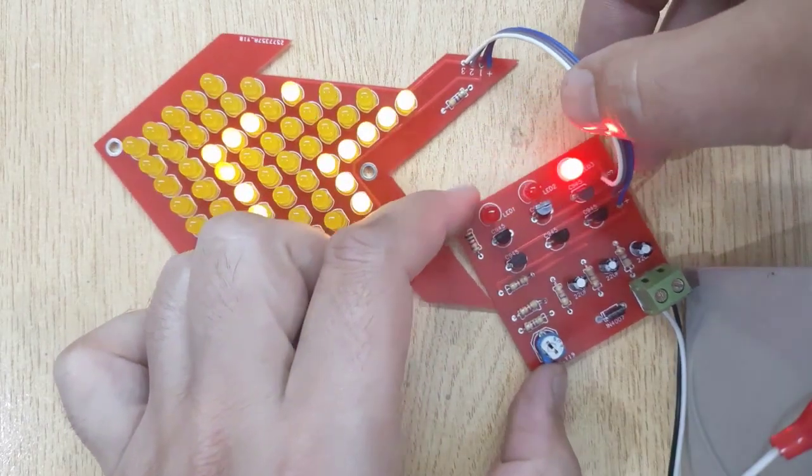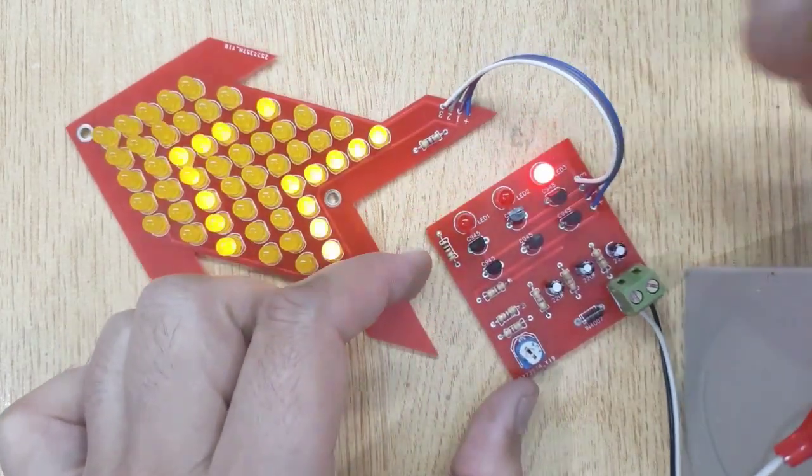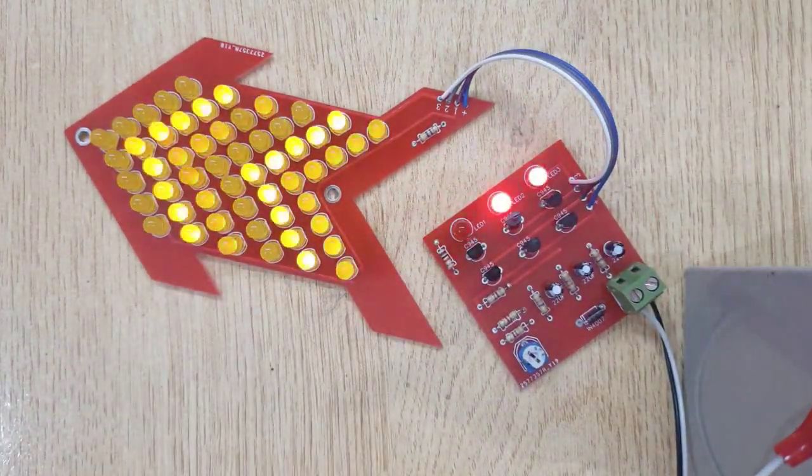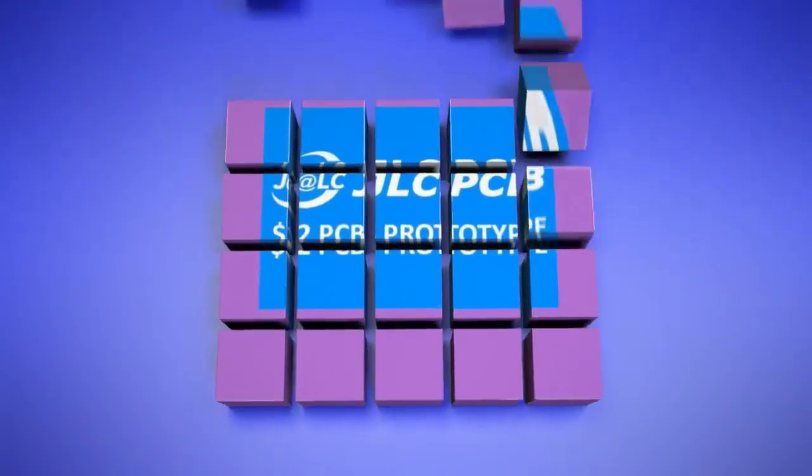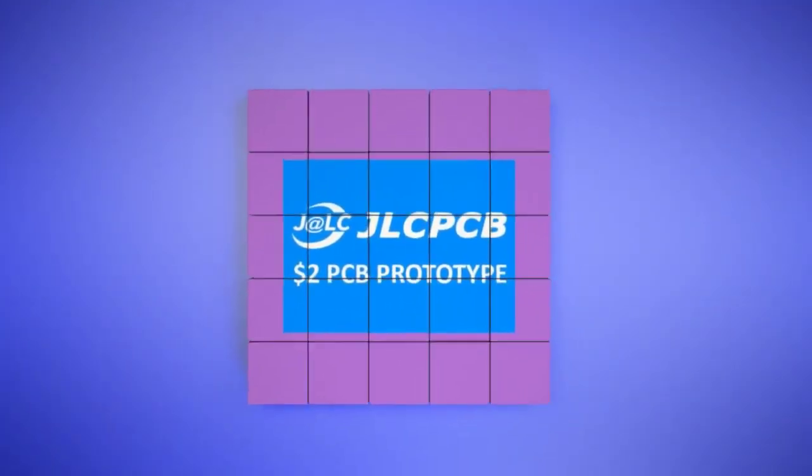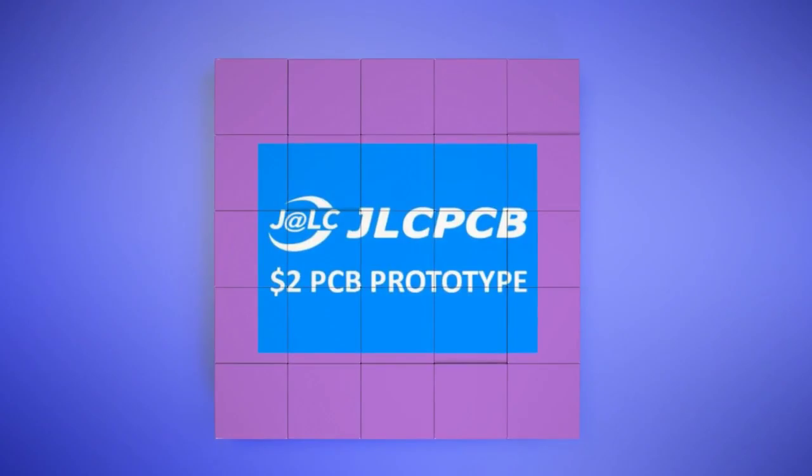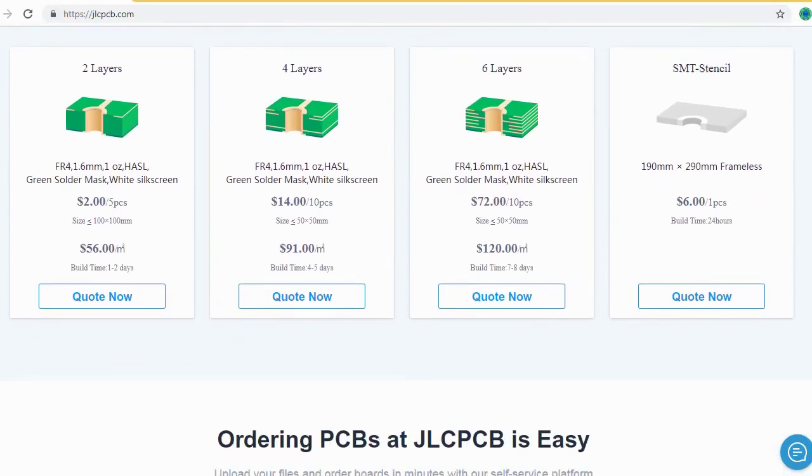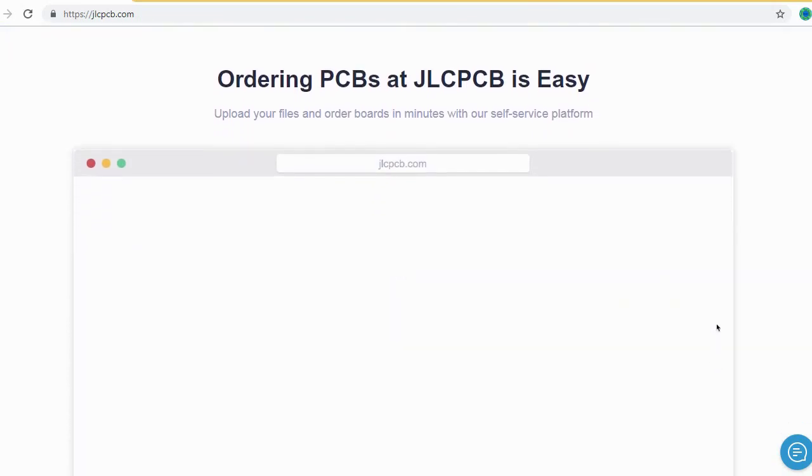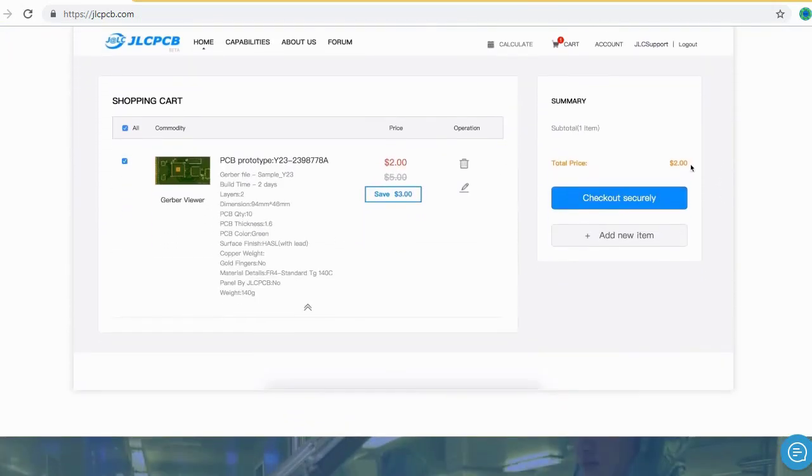If you are interested to order PCBs on jlcpcb.com, let me show you the ordering process. JLCPCB is the largest PCB prototype enterprise in China and a high-tech manufacturer specializing in quick PCB prototype and small batch PCB production. Ordering PCB with JLCPCB is very easy and simple.